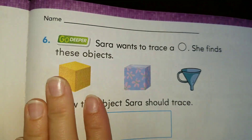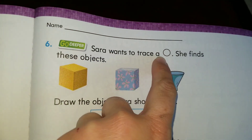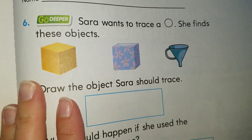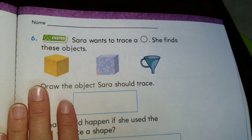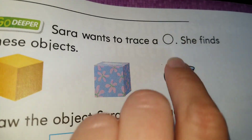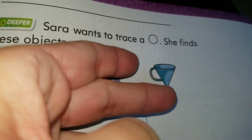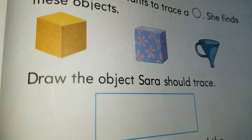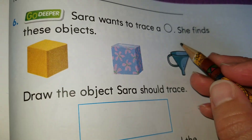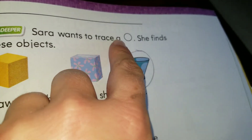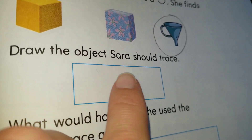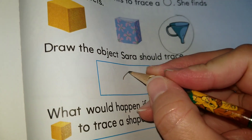Moving on to question number six. Sarah wants to trace a circle — she finds this object. Boys and girls, what object would be good to trace a circle? All the sides on a cube are shaped like a square, so you can't trace a circle with a square. But if you turn a cylinder around, you'll be able to use it to trace a circle — this part over here can help you trace a circle. So we circle it because this is the one that would be good to trace a circle. You draw me a circle.